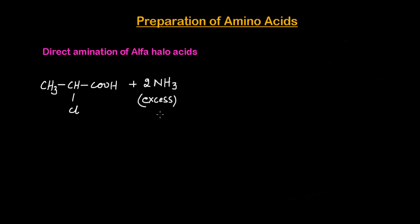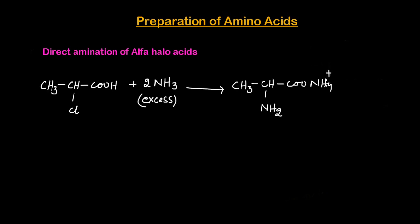We require excess ammonia here. When the halo acid reacts with this excess ammonia, it converts into CH₃CH where the Cl is replaced by the NH₂ group, and the COOH group is converted into an ammonium salt. So this acid group is converted into the ammonium salt of the alpha amino acid.